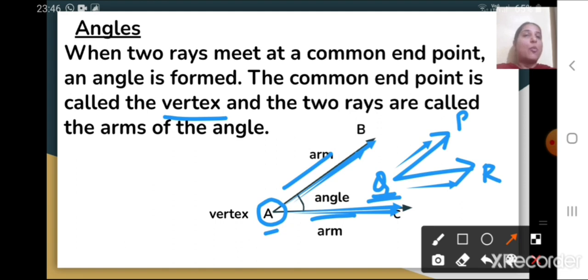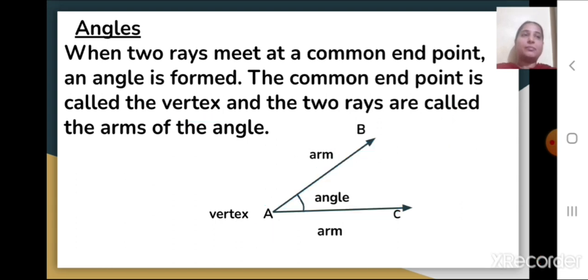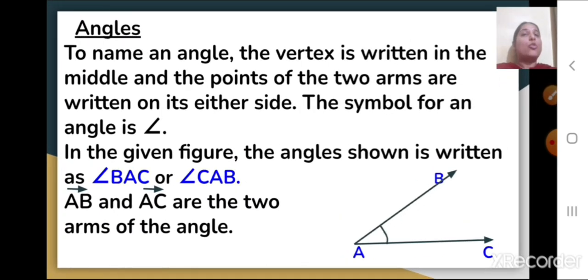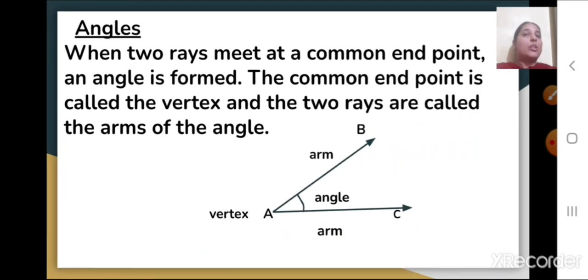That common end point where the two rays are meeting is called the vertex of the angle, and those two rays are called the arms of the angle. When two rays meet at a common end point, they form an angle. That common end point is the vertex and the two rays are the arms.